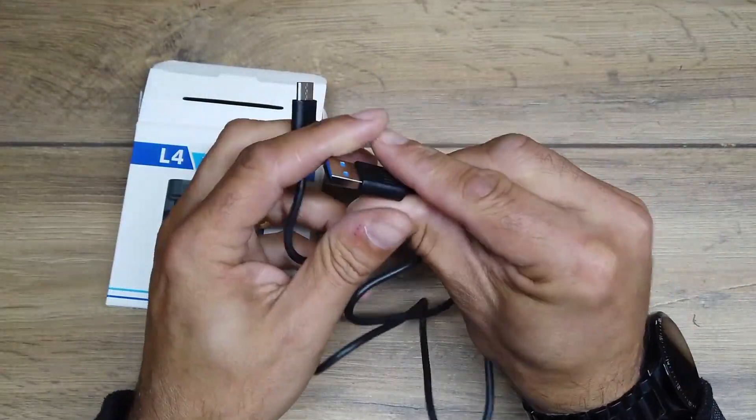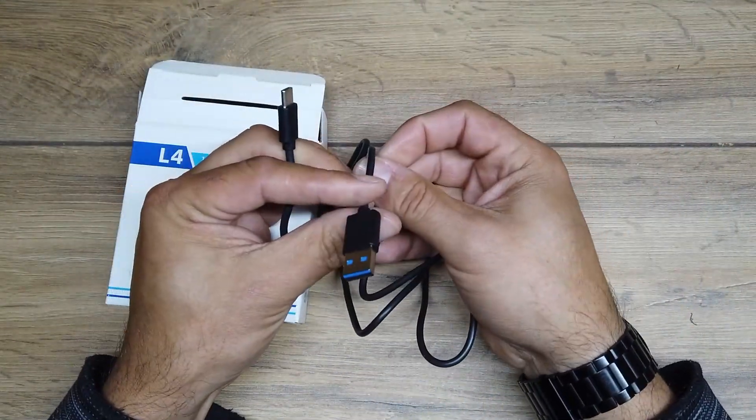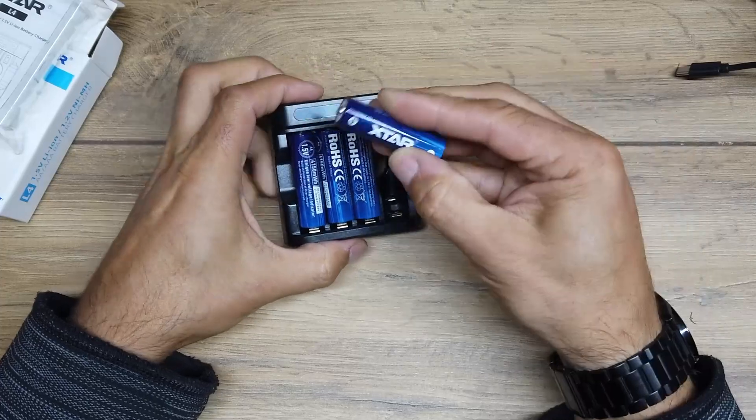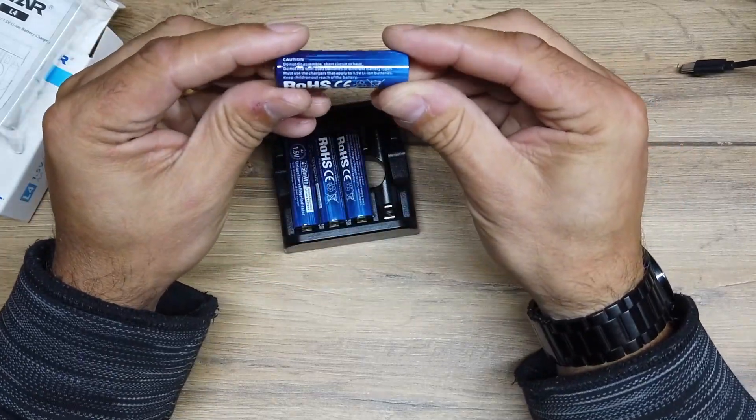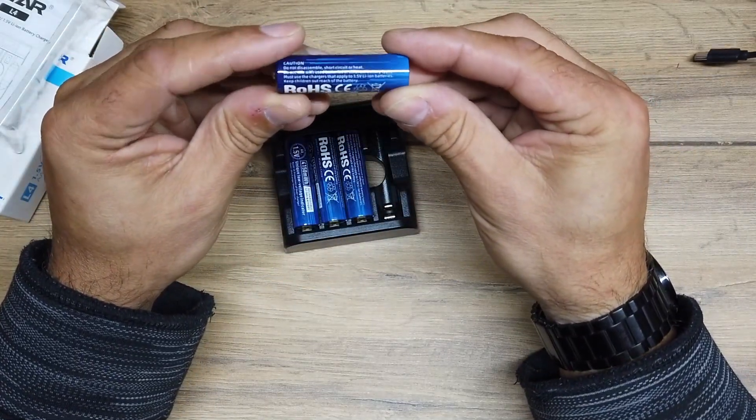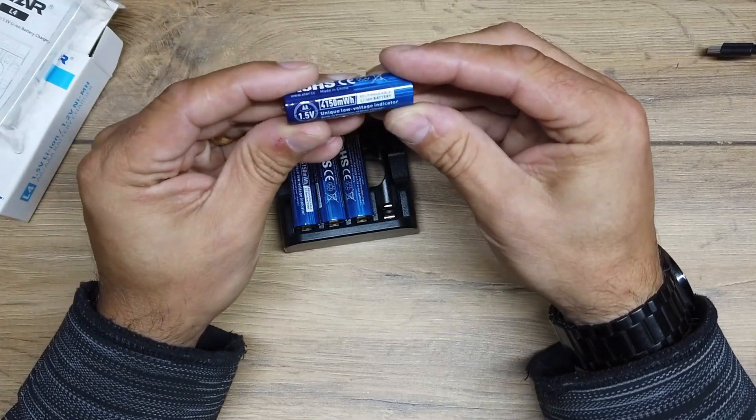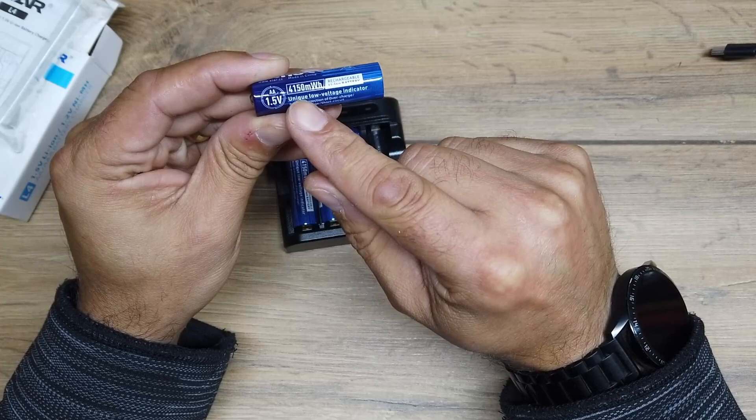We have a rather heavy duty USB C style cable. What we have here are some X-Star high capacity rechargeable lithium ion batteries, and on the tin they say they are 4,150 milliwatt hours at 1.5 volts and AA size.